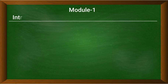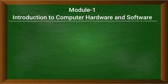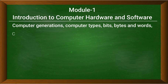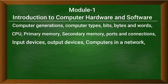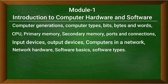In module one, which is introduction to computer hardware and software, you are going to understand computer generations, computer types, bits, bytes and words. You will also understand what is a CPU, different types of memories — primary memory, secondary memory, ports and connections, various input and output devices, computers in a network, network hardware, and software basics.